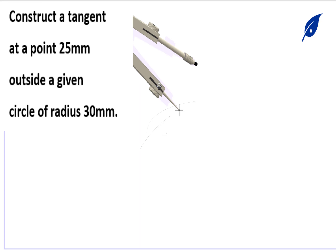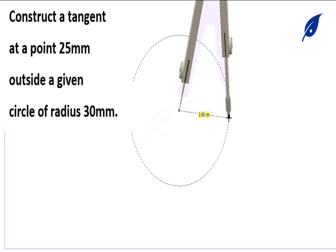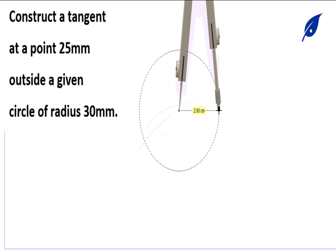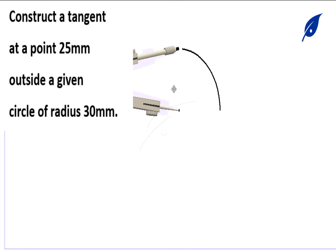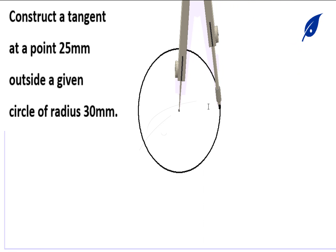Welcome to today's tutorial. Today we're going to start the construction of a tangent at a point 25 millimeters outside a given circle of radius 30 millimeters. The first thing we're going to do is draw a circle whose radius is 30 millimeters, and after that we'll get our point outside of the circle.